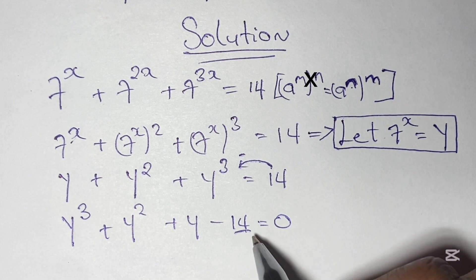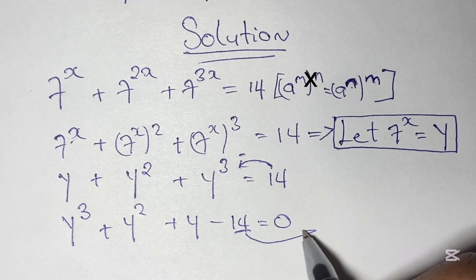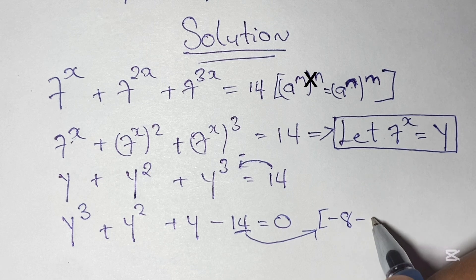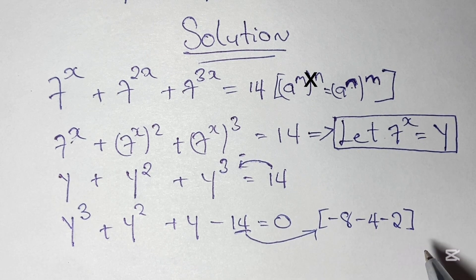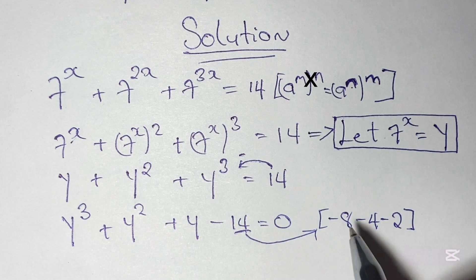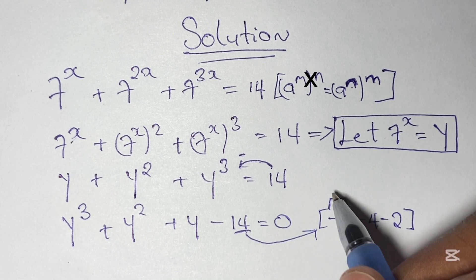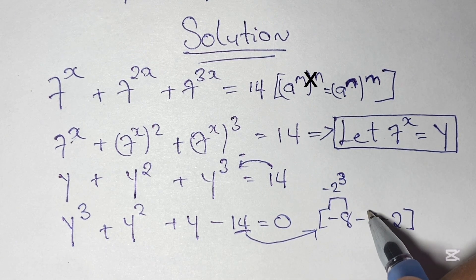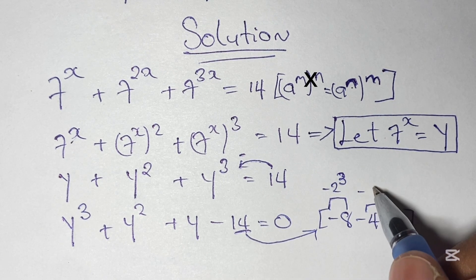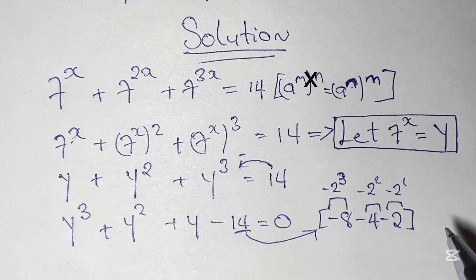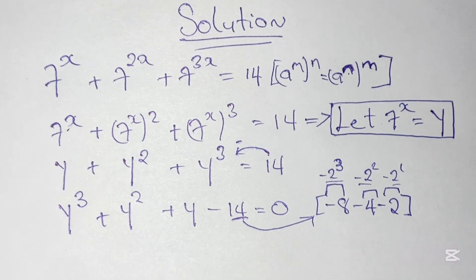Now we simplify our equation by evaluating negative 14 as negative 8 minus 4 minus 2. Negative 8 is a cubic number, so we write it as minus 2 to the power of 3. Negative 4 is minus 2 squared, and negative 2 is minus 2 to the power of 1. We take these three numbers and put them into our equation.